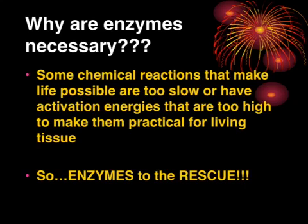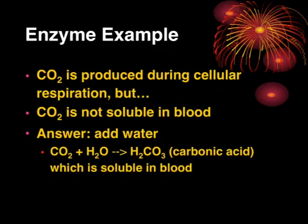We'll look at a specific example called carbonic anhydrase. CO2, carbon dioxide, is produced during cellular respiration, and then we exhale it from our lungs. But carbon dioxide is produced in all the cells of our body and has to get to our lungs through our blood. The problem is carbon dioxide is not soluble in blood by itself — it can't go into solution. So you need to add water. If you mix carbon dioxide and water, you get carbonic acid, which is soluble in blood. It then travels to your lungs, carbon dioxide comes out of solution, and you exhale it.